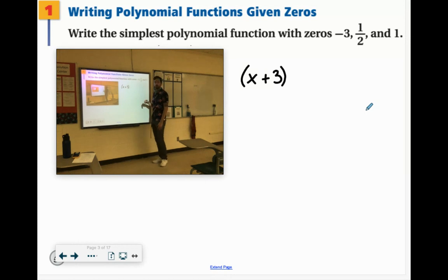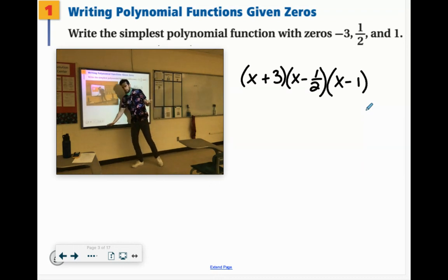Same thing here. It says the zero is 1 half. So that means that would be written as x minus 1 half. And one of the zeros is 1. So that would be x minus 1. We just need to multiply all three of these together and then we're done.